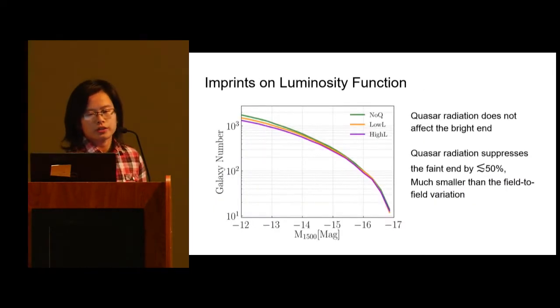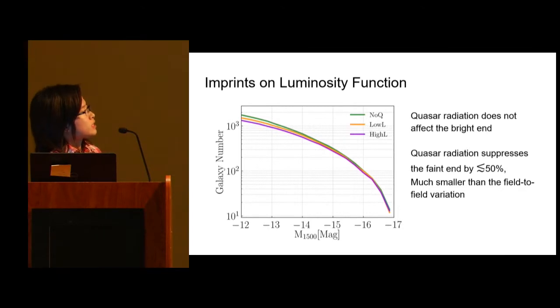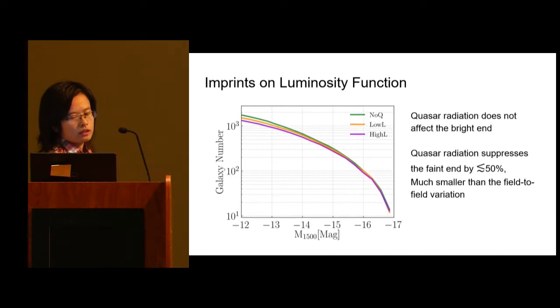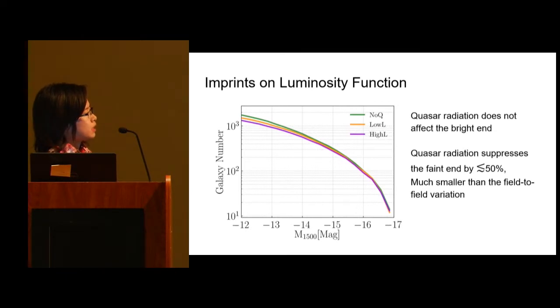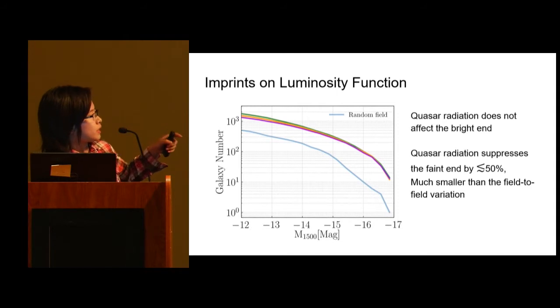Finally, I want to show you the imprints on the luminosity function. The right is the bright end. At the bright end, we can see that quasar radiation doesn't impact the luminosity function significantly, but at the faint end, quasar radiation can suppress the number by around 50%. However, this suppression is not nearly as comparable as the field-to-field variation. Here I plot the same luminosity function but choose a random field. We can see that the difference is far larger than the difference caused by quasar radiation.